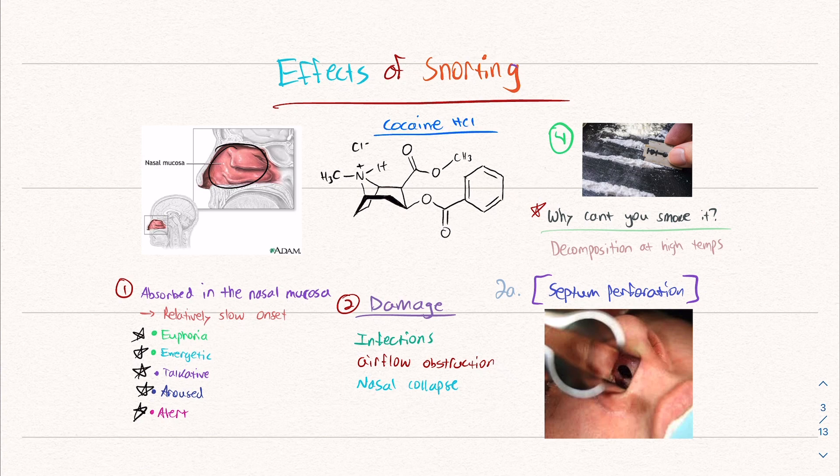Number two, the damage. I think this is really important because when you do snort cocaine, especially consistently, you will completely destroy your nose and that whole area. You can get infections, airflow obstruction. Your whole nose can pretty much collapse. The cartilage can be damaged. 2A right here, septum perforation.